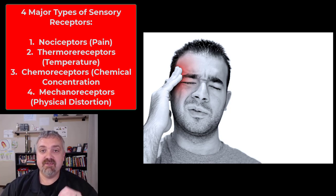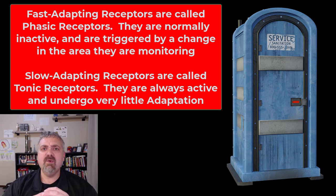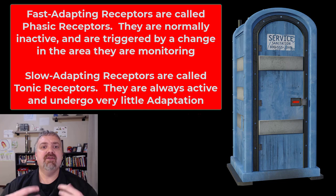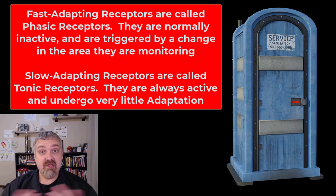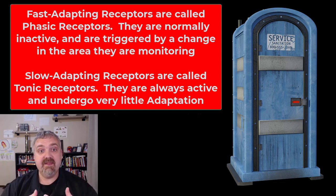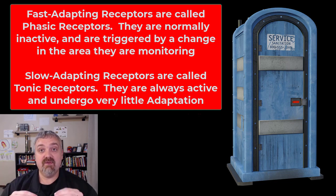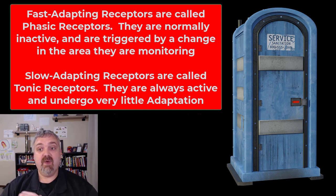Before we talk about nociceptors, I want to cover the term adaptation. Adaptation is how your nervous system responds to the presence of a constant stimulus. If something is painless and constant, your nervous system will basically get used to it and stop wasting energy reminding your brain about it. There are two types: peripheral adaptation, where a receptor itself changes, and central adaptation, which occurs in the brain — like getting used to a new smell quickly.